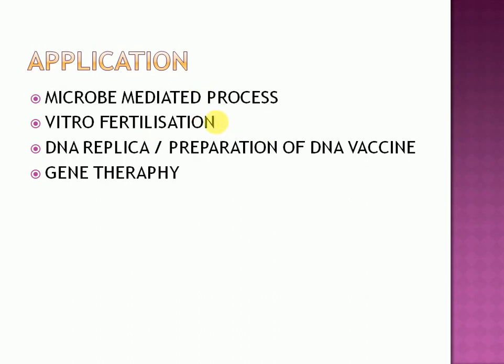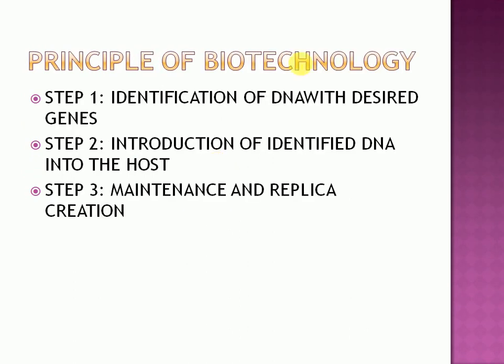This is done with the help of biotechnology. DNA — deoxyribonucleic acid — replication, or preparation of DNA vaccines, is a major application. Then comes gene therapy: correction of defective genes is done with the help of gene therapy. For example, severe combined immunodeficiency requires gene therapy, which is done with the help of biotechnology.